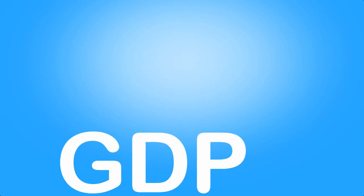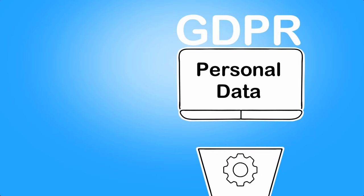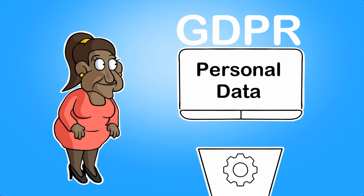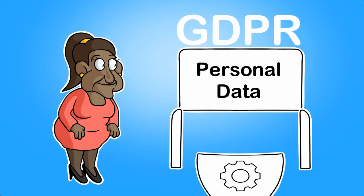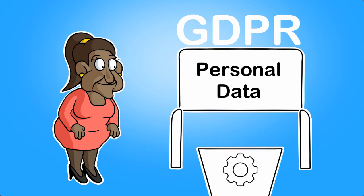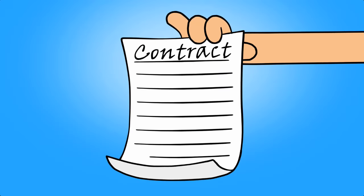Under the GDPR, personal data can only be accessed if there is a legitimate basis to do so. The most common of these is consent, which means that the customer has explicitly given you permission to process their data. Another common basis is contract, which means that you need to process the data to fulfill a business contract or agreement with a partner or customer.